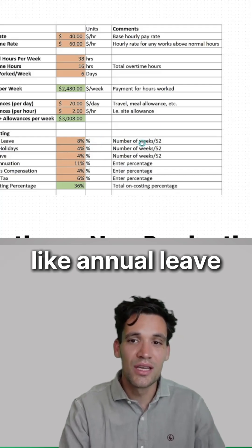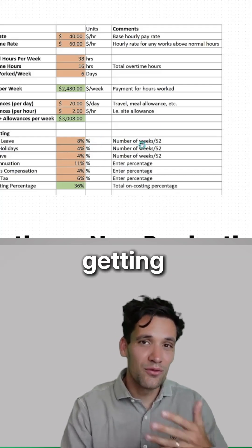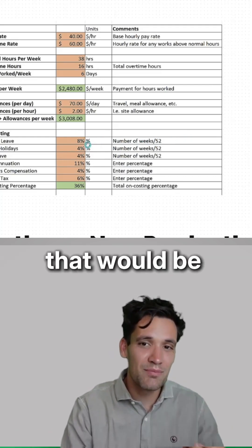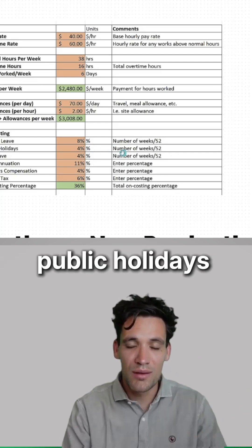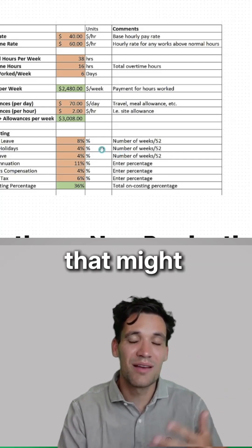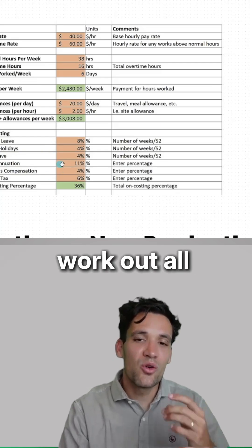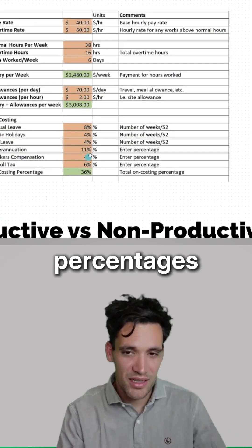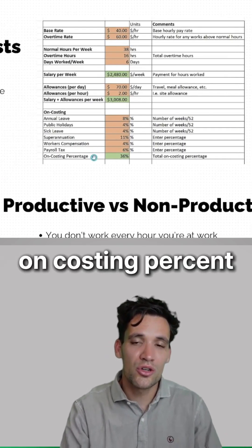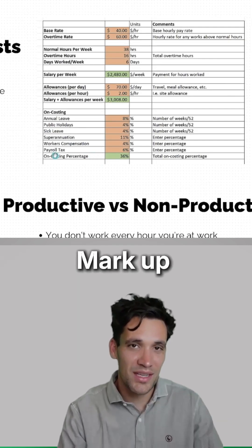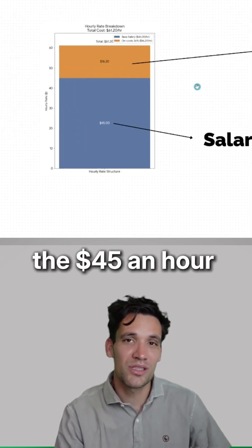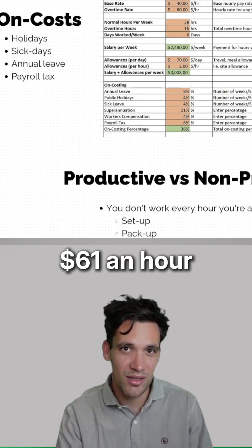For something like annual leave, where they're getting four weeks of holiday every 52 weeks, that would be an 8% increase on their salary. For public holidays, where they're getting 10 days per year, that might be 4%. You need to work out all these exact percentages for your business, which gives you your total on-costing percent — which is what we mark up their salary by. That's why the $45 an hour goes to $61 an hour.